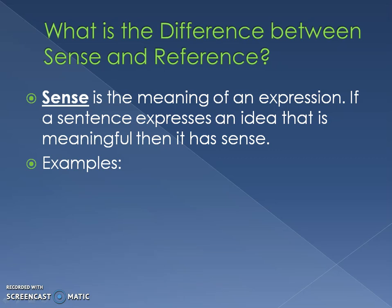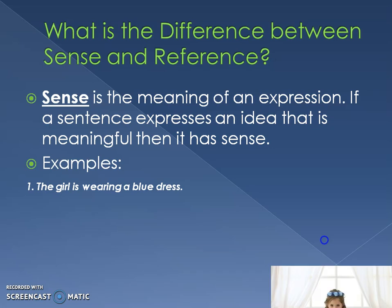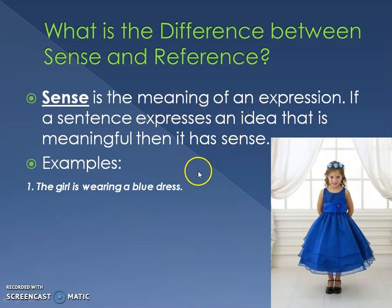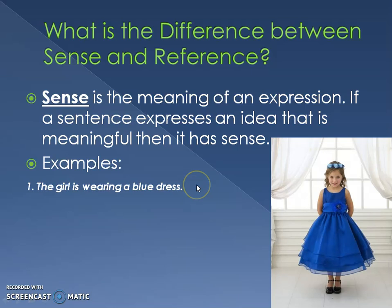Let's look at some examples. The sentence says: 'The girl is wearing a blue dress.' The sentence makes sense and it's grammatically correct. So we have sense here — it's a meaningful expression giving me an idea that I can understand.